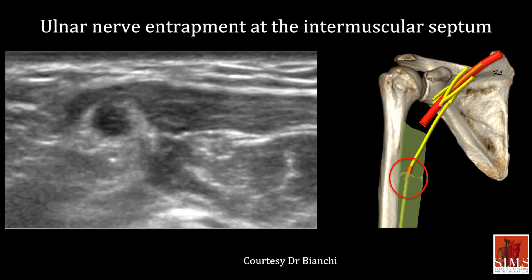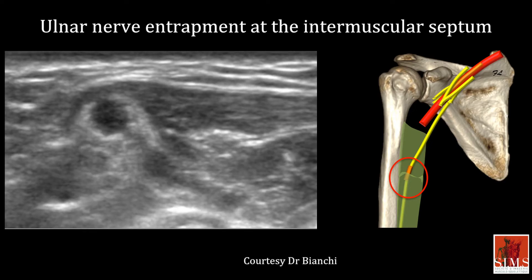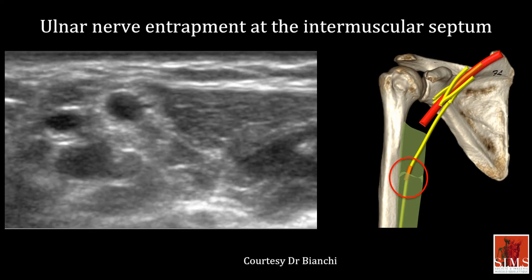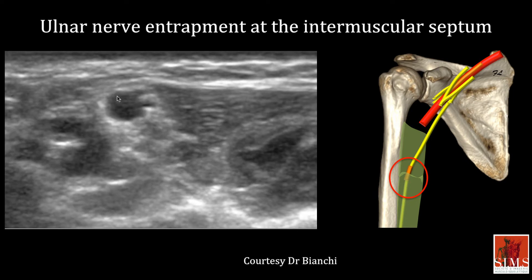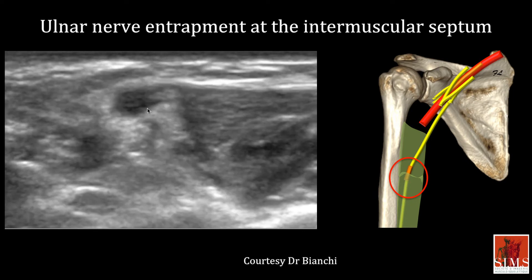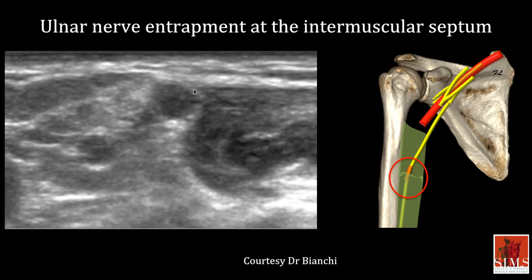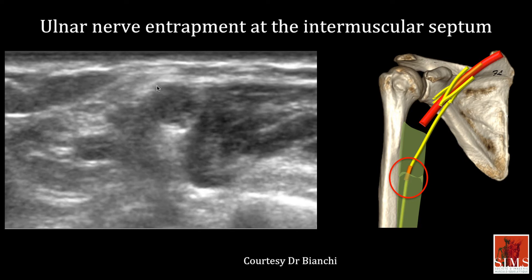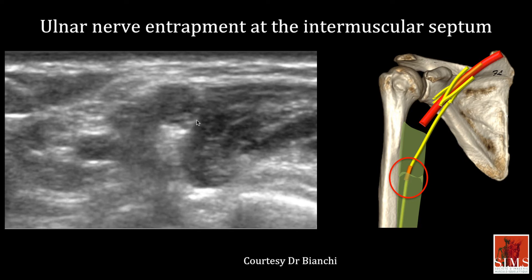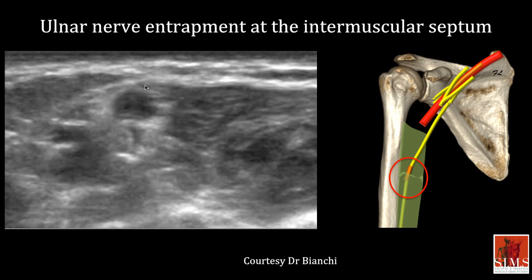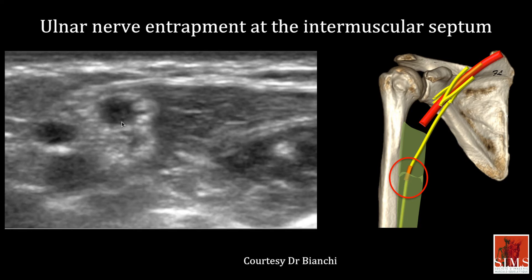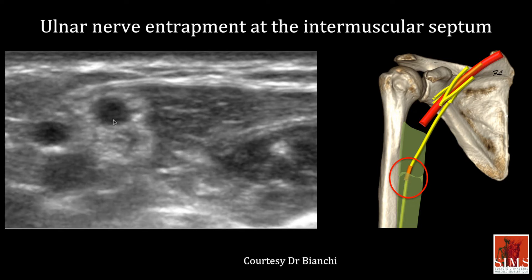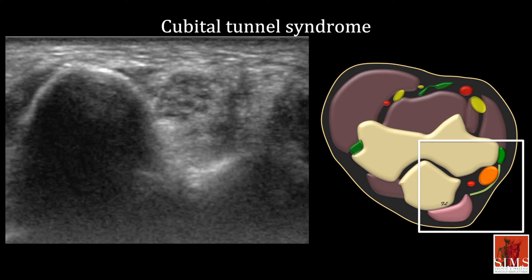The point where the ulnar nerve pierces the intermuscular septum is a classic but rare site of ulnar nerve entrapment. Here you see a very enlarged ulnar nerve that pierces the medial intermuscular septum with difficulty and remains thickened below it. Tracing it back above, you also see this hypoechoic and thickened appearance.